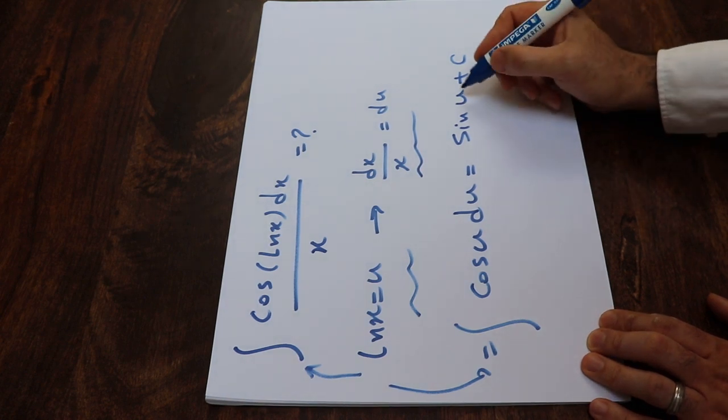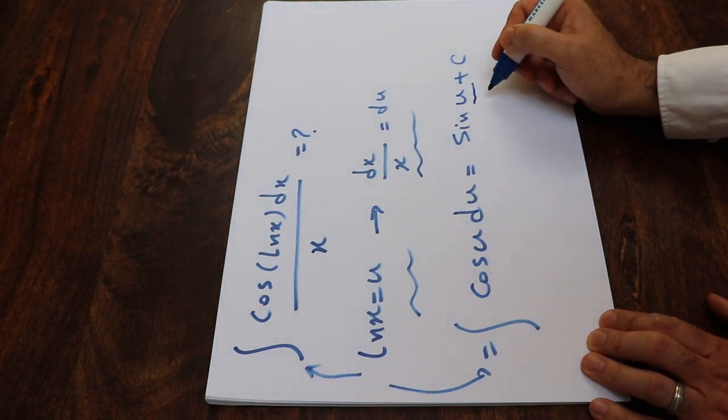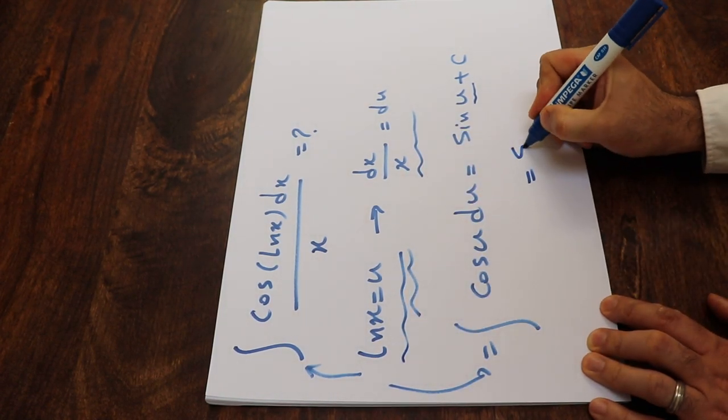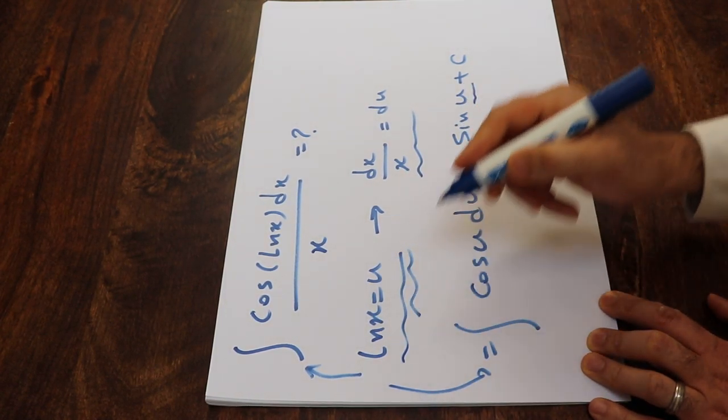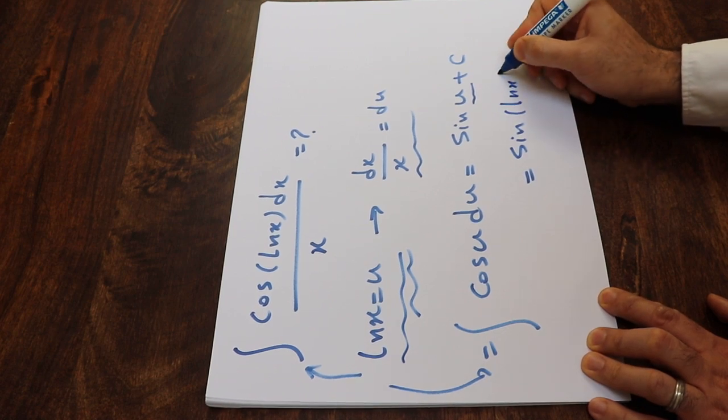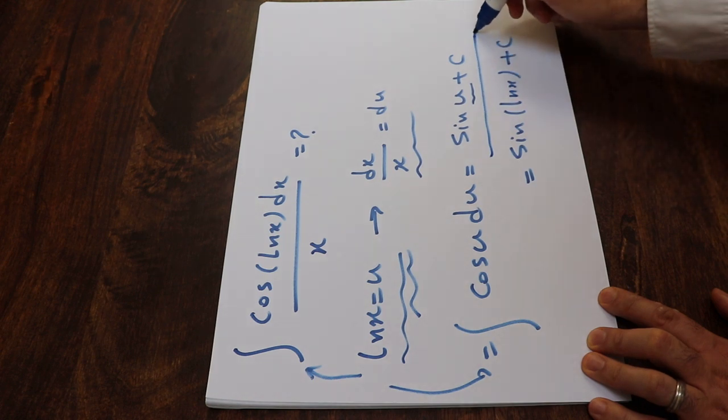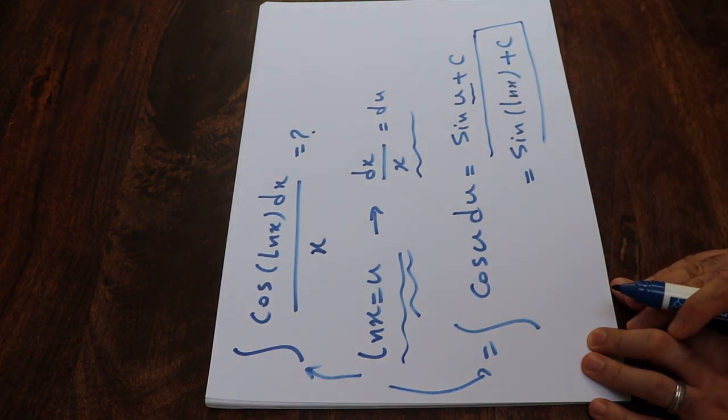Now substitute the parameter u by the definition of u, which is ln(x). Therefore, this will be equal to sine ln(x) plus c, the constant of integration, and that is the solution to this integral.